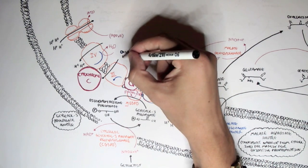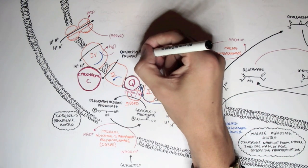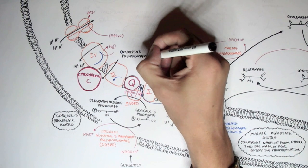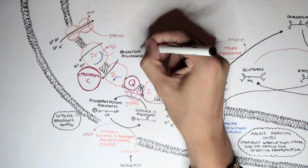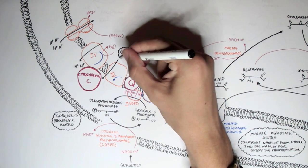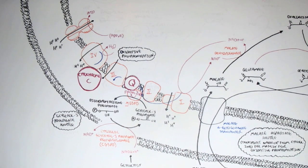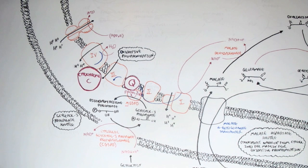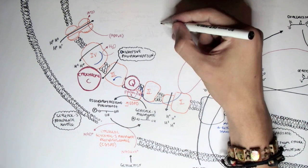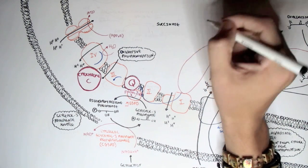What's important to understand is that the malate-aspartate shuttle shuttles NADH from the cytoplasm into the mitochondrial matrix, allowing it to associate with complex 1. However, through the glycerol 3-phosphate shuttle, NADH is not brought into the matrix — only into the intermembrane space — where it is essentially converted to FADH2, missing complex 1, pumping fewer hydrogen ions, and therefore producing less ATP.